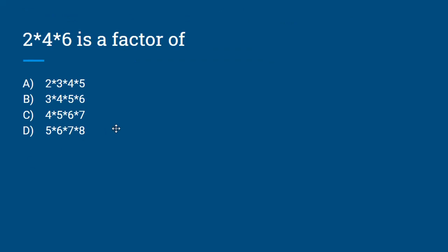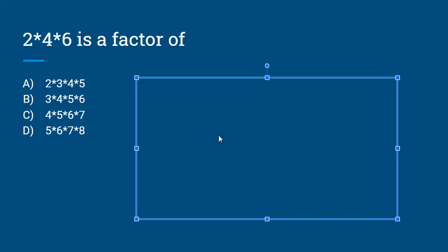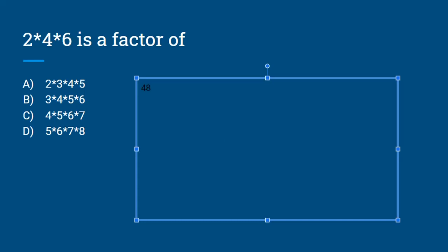Our last question is: 2 times 4 times 6 is a factor of: A) 2×3×4×5, B) 3×4×5×6, C) 4×5×6×7, D) 5×6×7×8. What we're going to do is calculate 2 times 4 times 6, which is 48. Let's check out A. 2 times 3 times 4 times 5 would be 120, and 48 cannot go into 120 evenly.